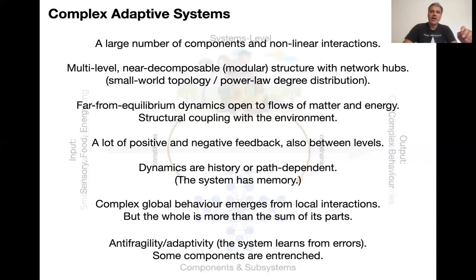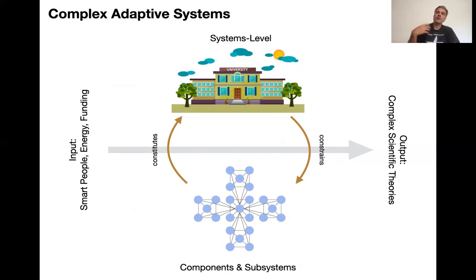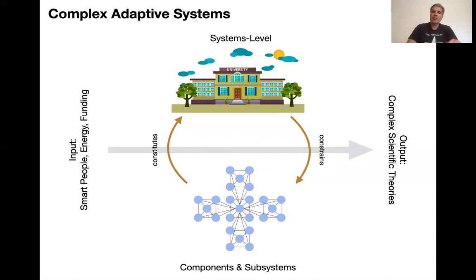Just to remind you, I'm talking about organisms here, and we're going to continue talking about organisms. But as I said in my lecture about Bill Wimsatt's perspectivism, you can apply this abstract formal definition of a complex adaptive system to science itself and its institutions and communities. Instead of food and perception, you get smart people, energy and funding going into the system. The people in the system constitute it, but it constrains our career choices and research questions. And in the end, you get complex scientific theories out of this complex adaptive systems behavior, and a scientific worldview that is able to adapt, just like an organism adapting to its environment.